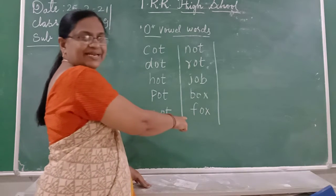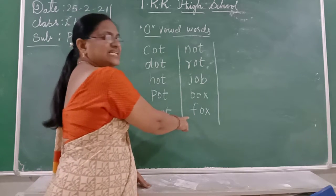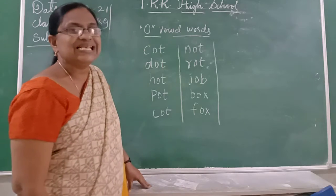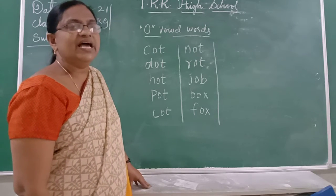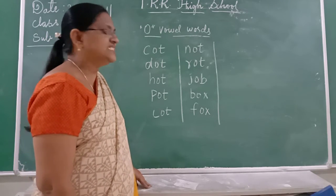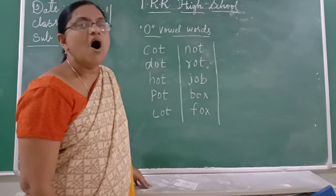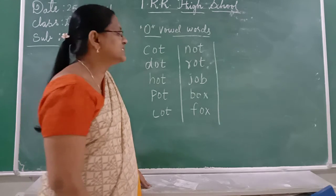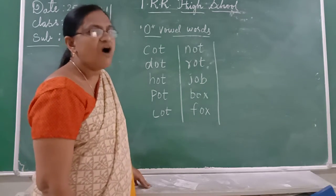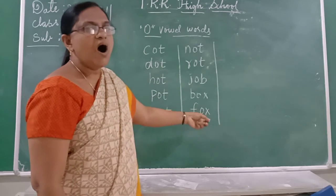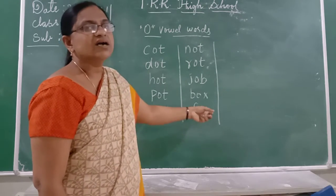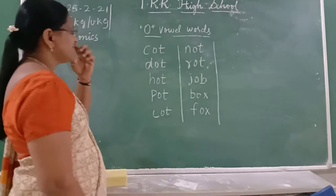Then we move on to the next word. What is the sound of F? The sound of F is F. And the sound of O is O. And the sound of X. F-O-X. Fox. Fox.